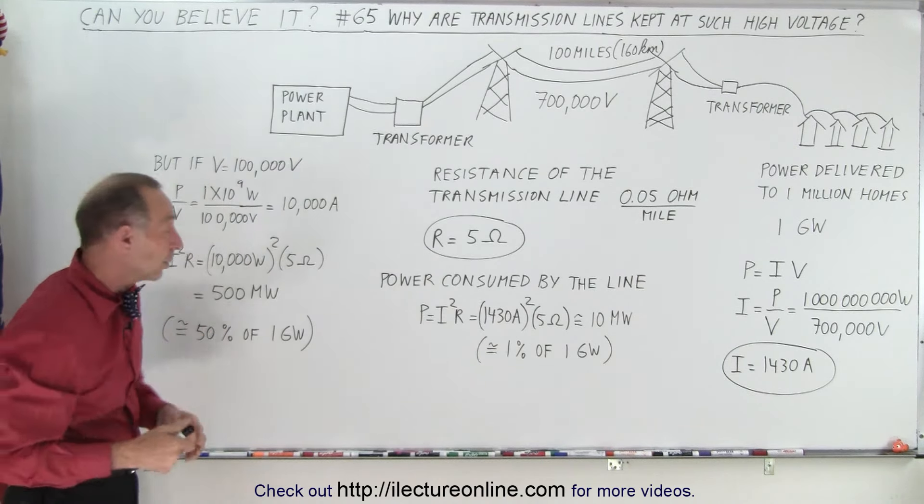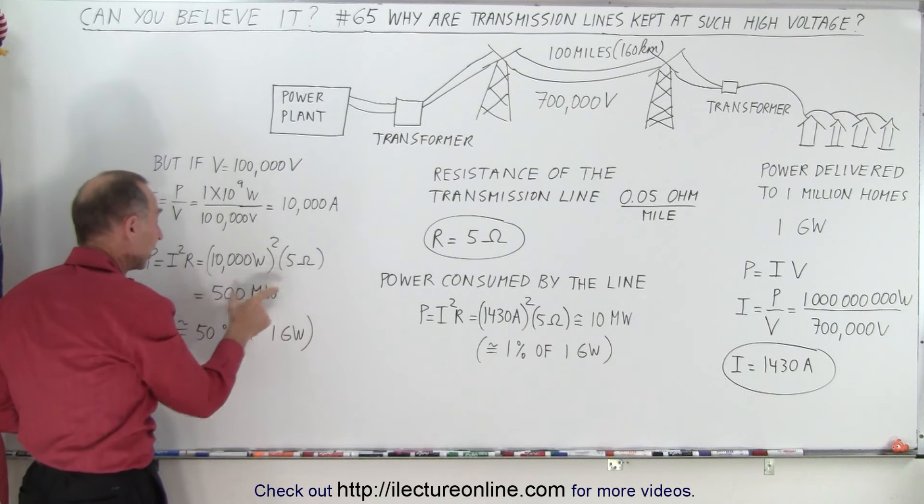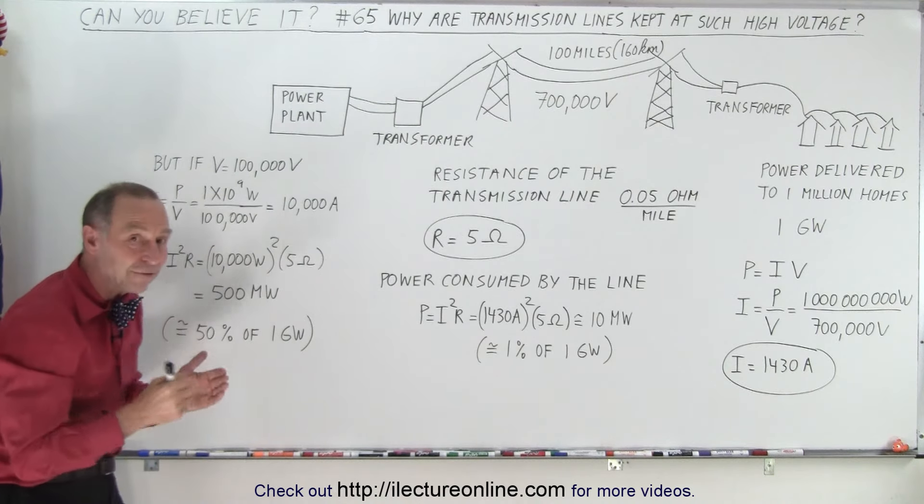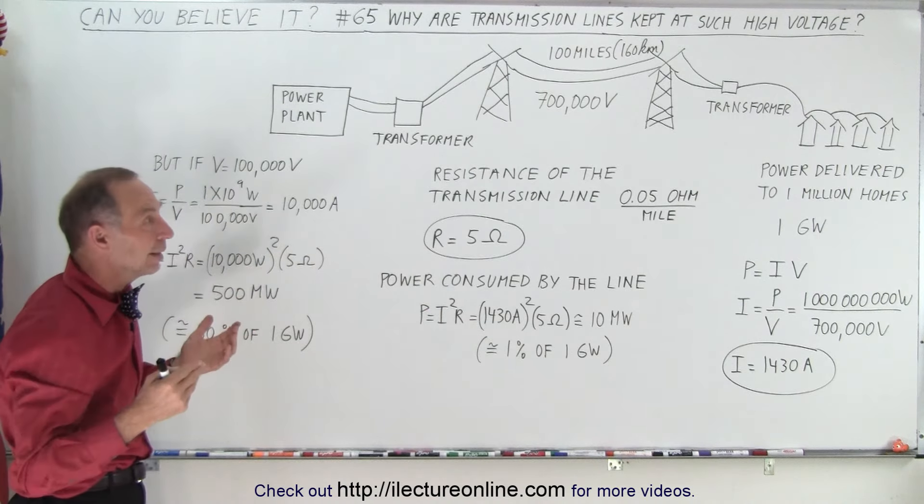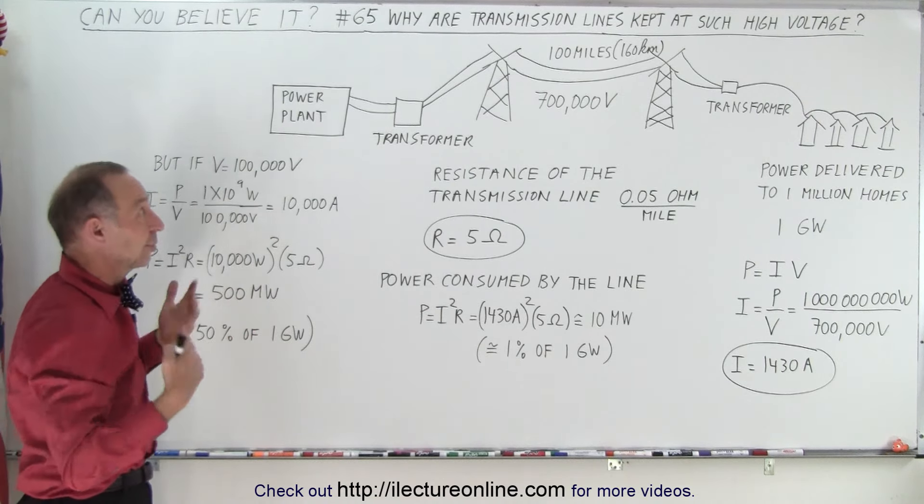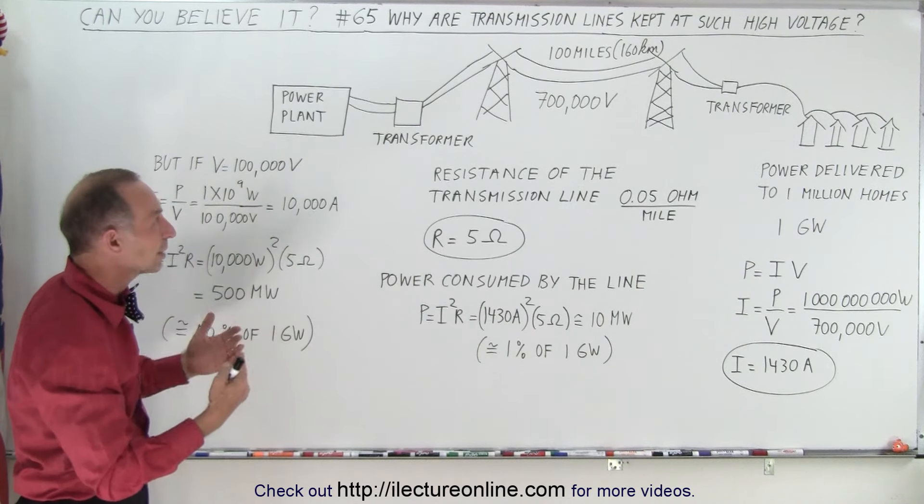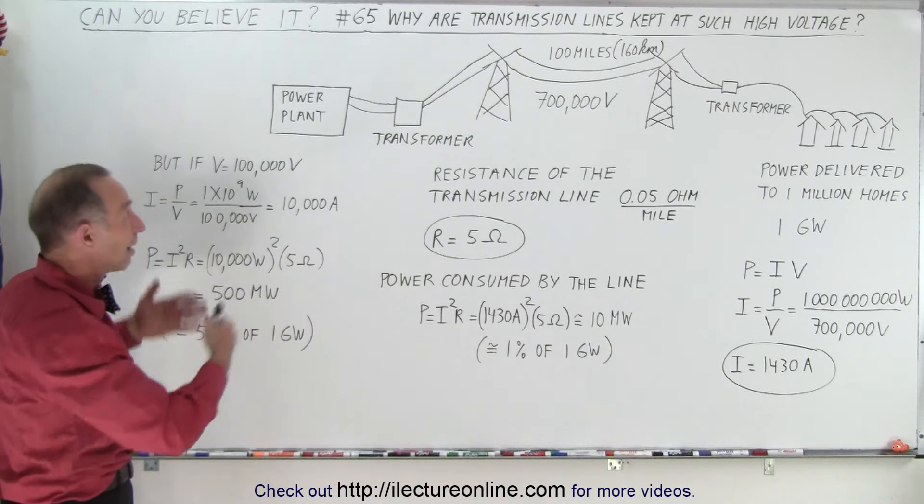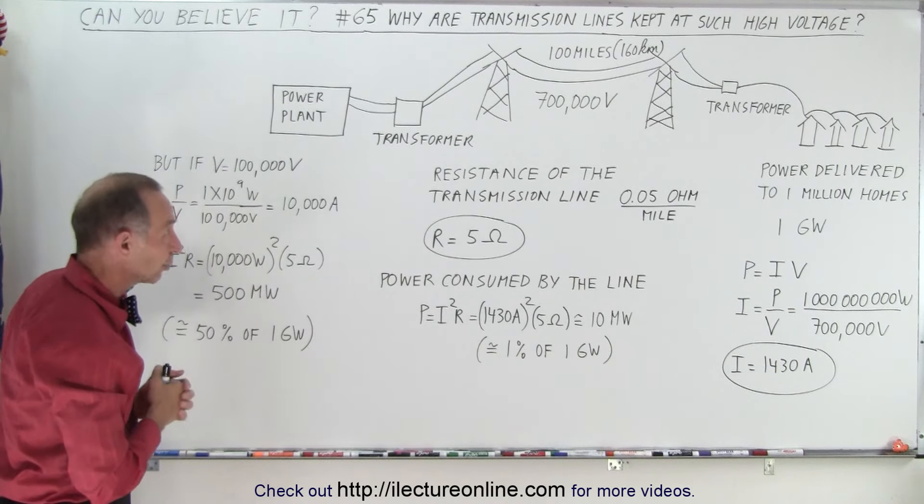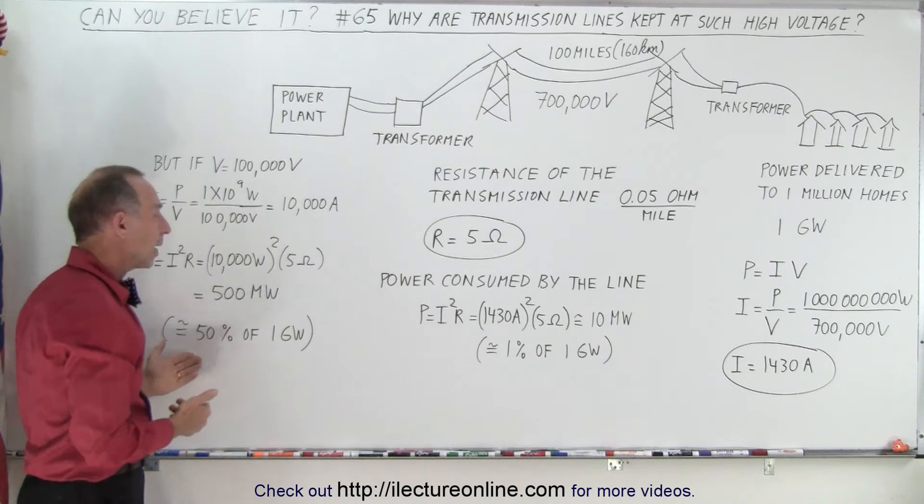So how much power is consumed now by the wires? Well you take the current squared times the resistance, that is now 500 megawatts. In other words, half of the power that you try to send to the houses gets consumed by the wire along the way. Not only that, the wire would get so hot it might melt. That's a lot of power consumed by this wire, and obviously you don't want to waste all that energy. You don't want to have potential problems with the wire getting too hot.